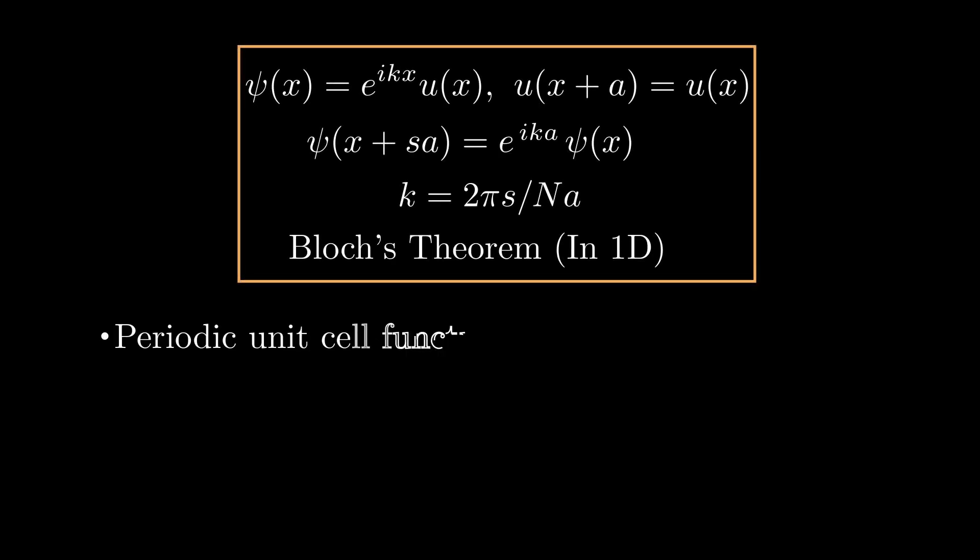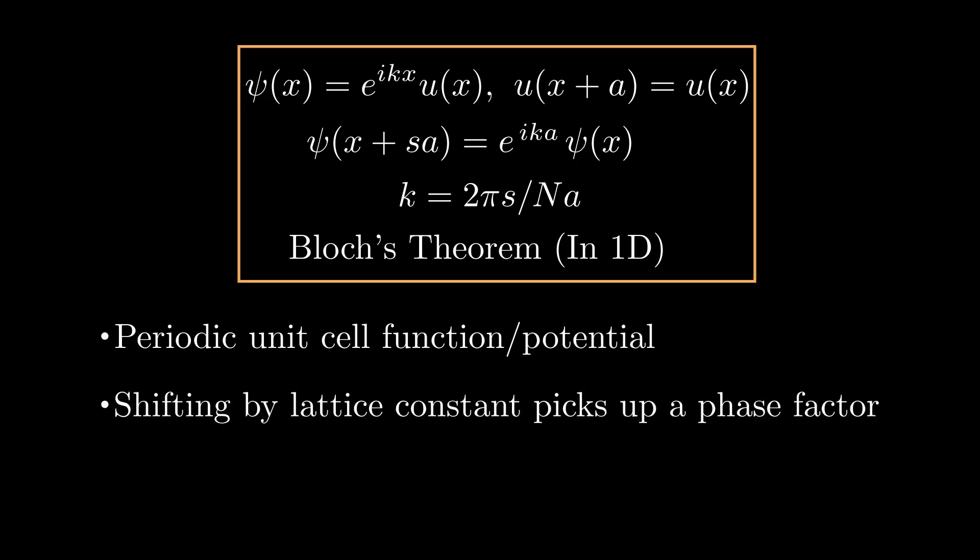Okay, so the key takeaways are that our electron wave function is dependent on this periodic unit cell function. Whenever you shift by the lattice constant, that is an integer multiple of a, you'll pick up some phase factor e to the ik a.